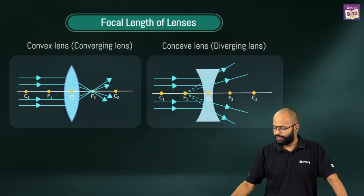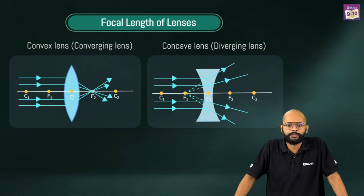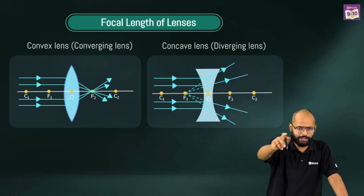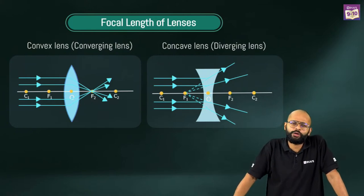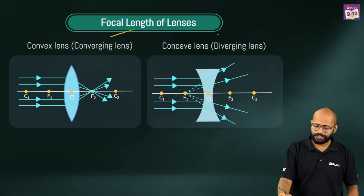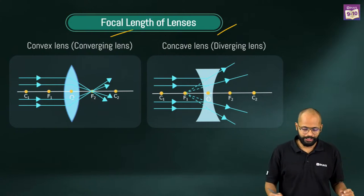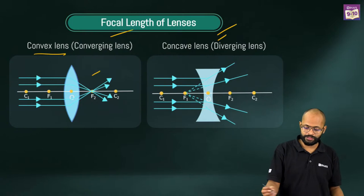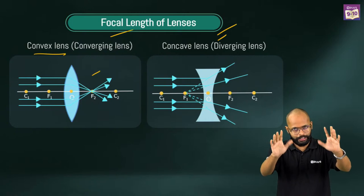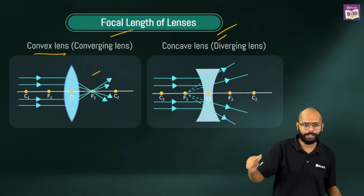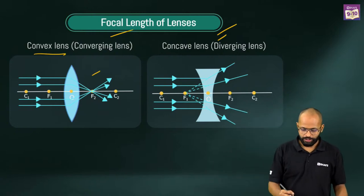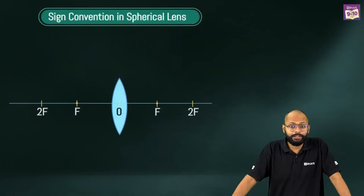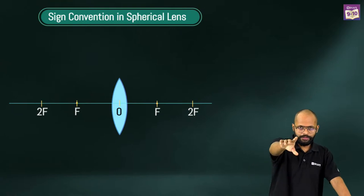So let's start with something which we already know. What do we know? We know focal length. A convex lens is a converging lens — it has a focal length which is to the right. A concave lens is a diverging lens. We know parallel rays come and then diverge after a concave lens. Fine. Now let's do sign convention very quickly together.